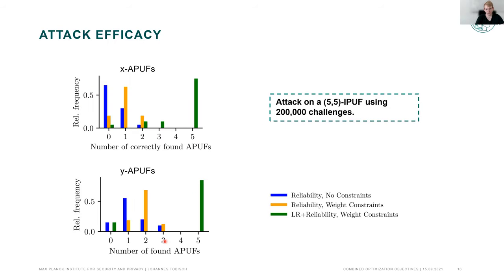We ran experiments on simulations showing that including all available information is beneficial. In blue is the original reliability attack; in orange, the constraint term is added discouraging convergence to the same solution; and in green, the logistic regression loss is additionally included. On the 1×5 Interpose PUF, with our modified approach in green, you are able to find all arbiter paths and model the complete PUF.